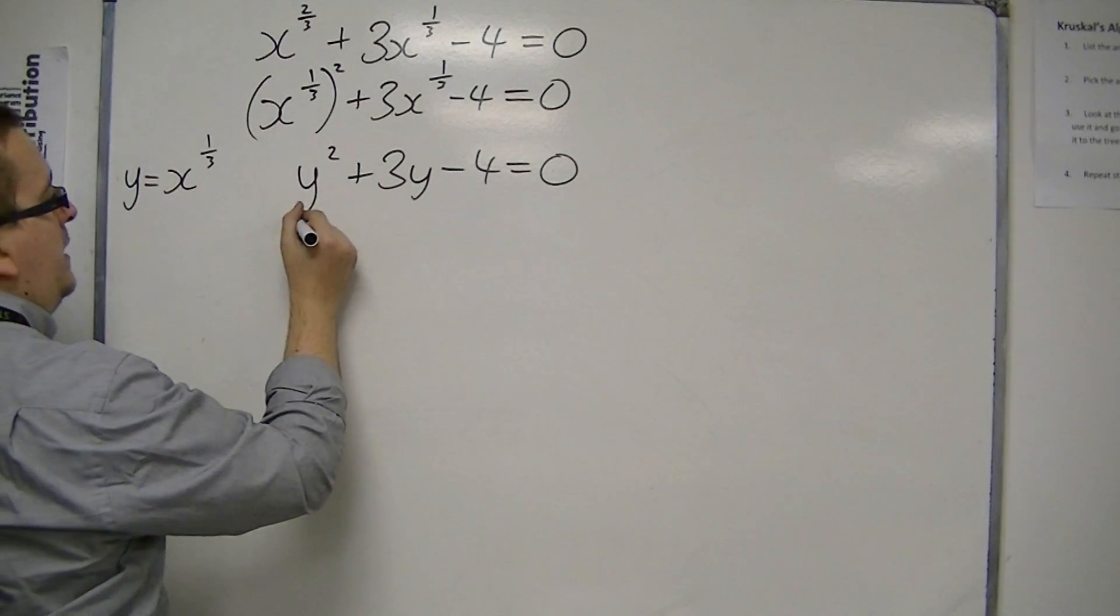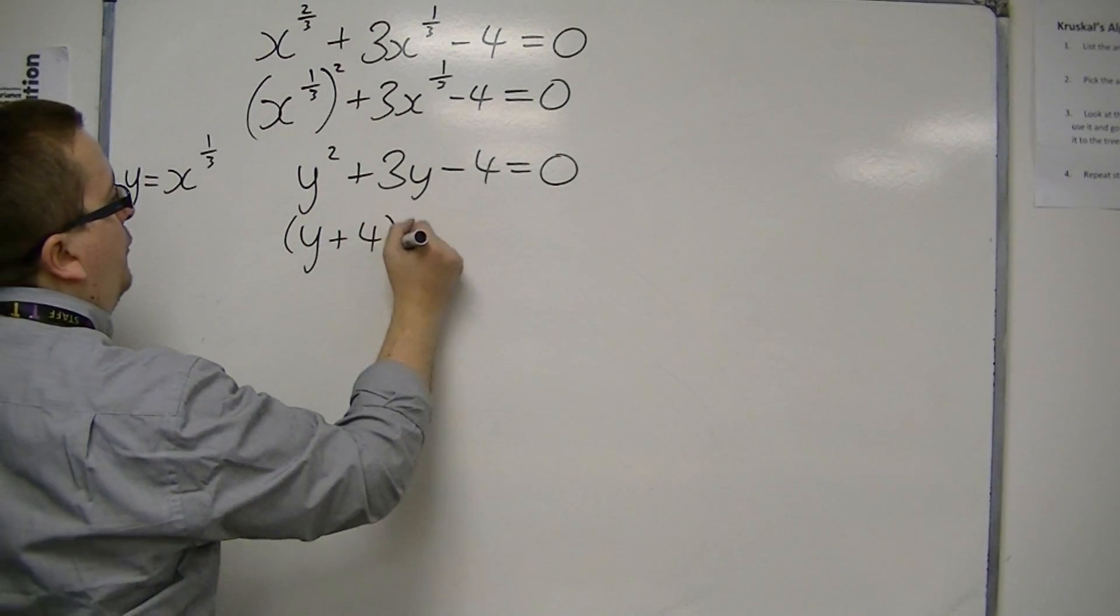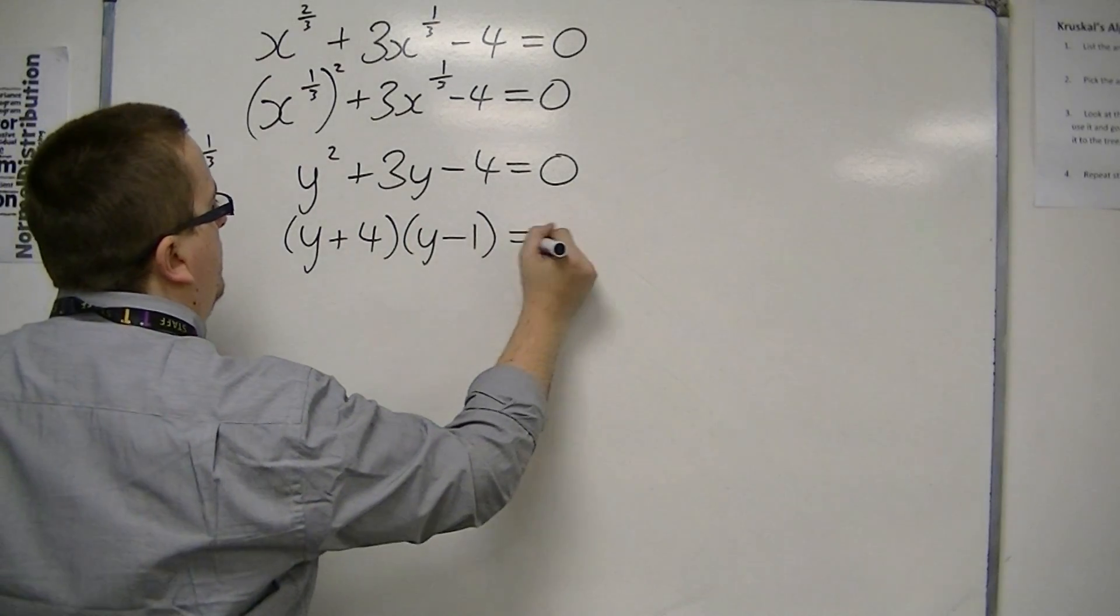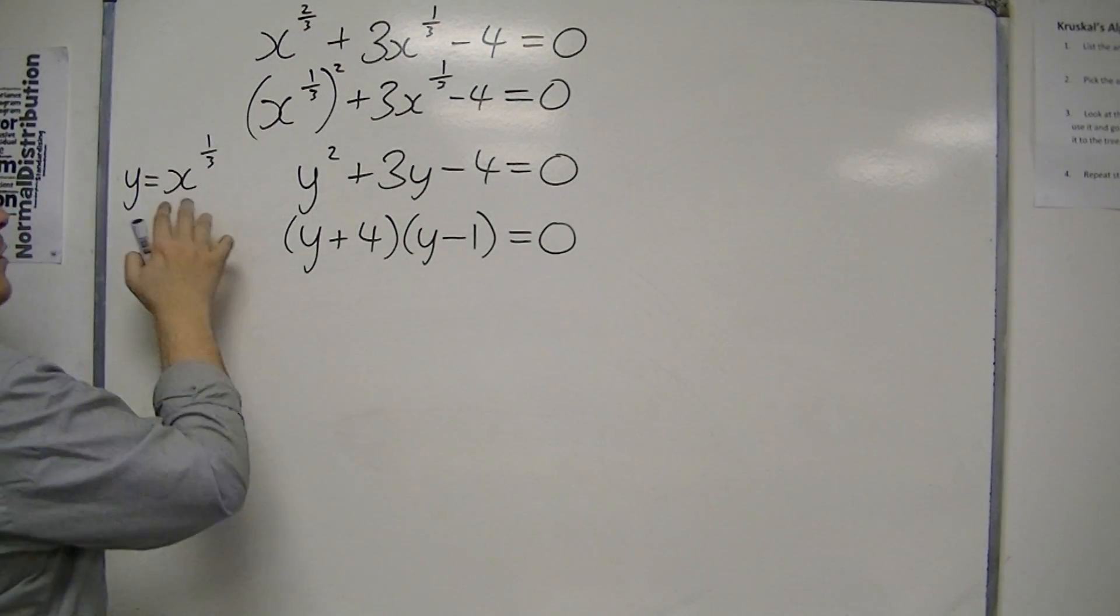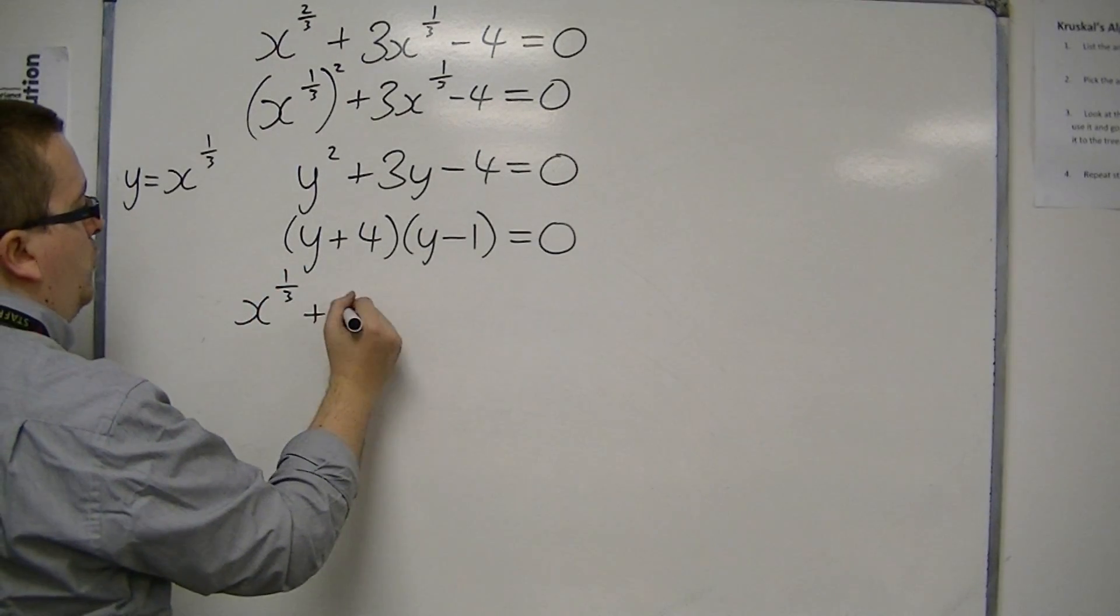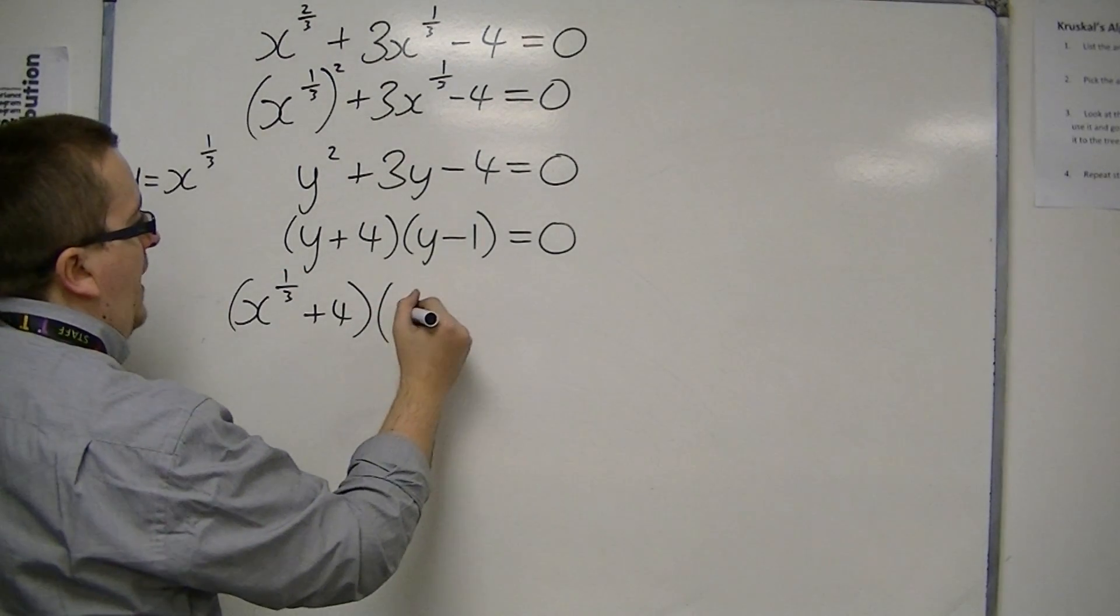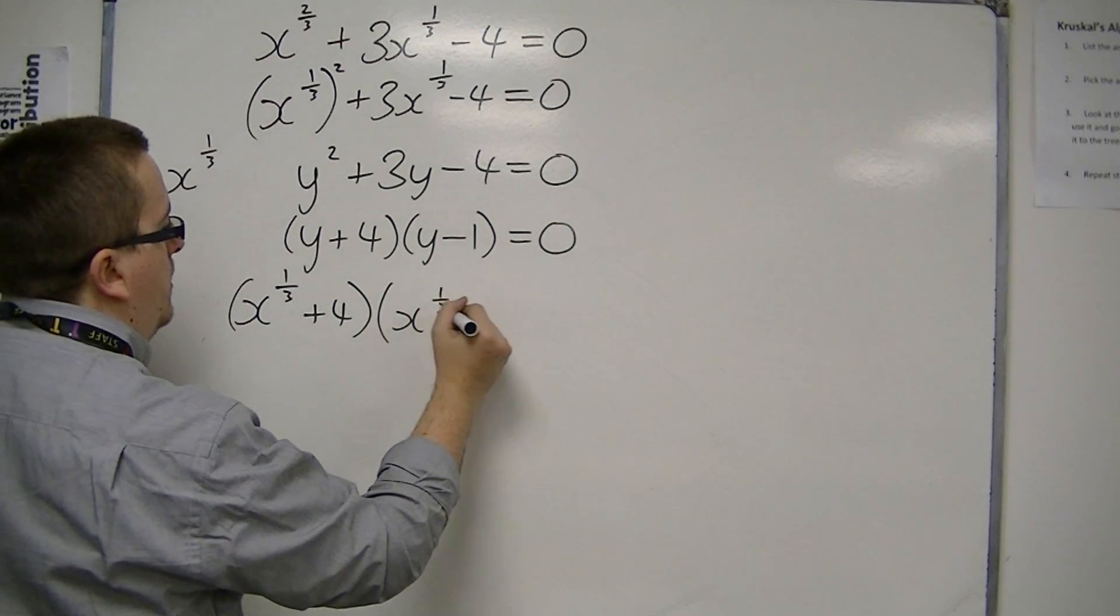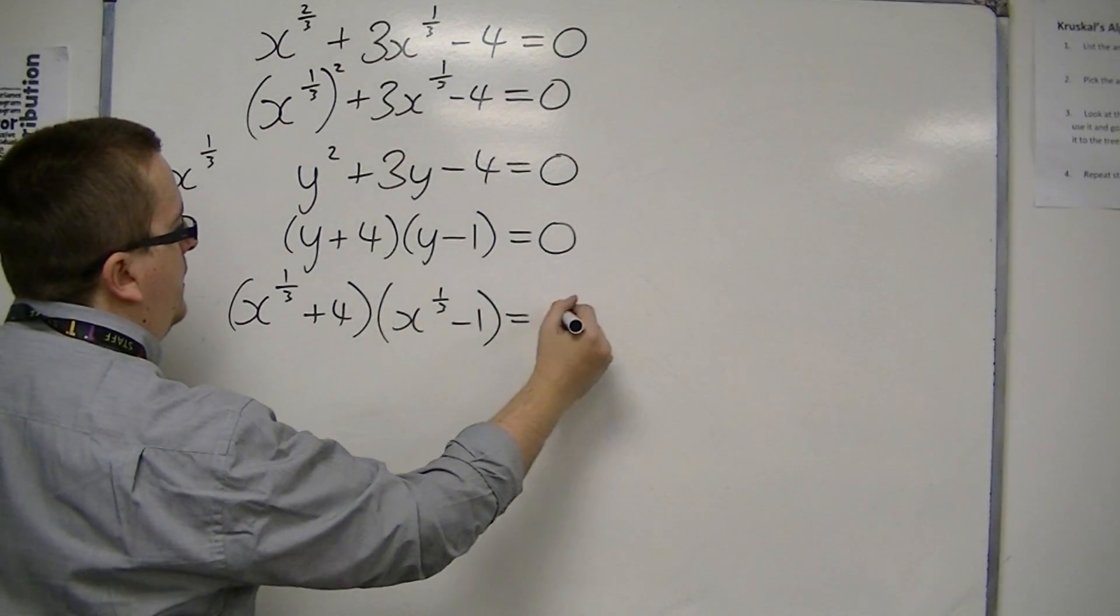This can be factorised, so that's y plus 4, y minus 1. And then, if I put the x to the 1 third back in, I have x to the 1 third plus 4 times x to the 1 third minus 1 is 0.